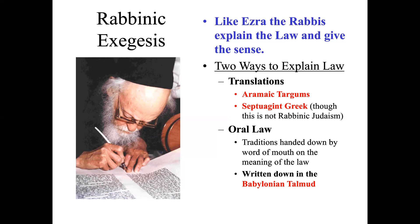There were also translations necessary into Greek. As Alexander the Great came and conquered the world in which the Jews lived, many people started speaking Greek — in Egypt, in Palestine, and around the Roman world even into Mesopotamia. Because of this influence of the Greek language, there was a need for Jews to translate the Bible into Greek. That early Jewish translation into Greek, taking place from the second century BC to around the first century BC, is called the Septuagint. This is not part of rabbinic Judaism, but it is part of the early Jewish tradition.